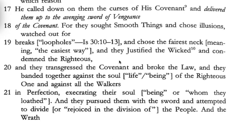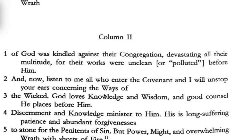The Dead Sea Scrolls are not calling them out by name, but the people of this group would obviously know who they're talking about. 'They banded together against the nefesh of the righteous one and against all the walkers in perfection, execrating their souls, and they pursued them with the sword and rejoiced in the division of the people.' I also believe Paul has some role in the death of James, so if this was written after James's death, 'banded together against the soul of the righteous one' would make sense.